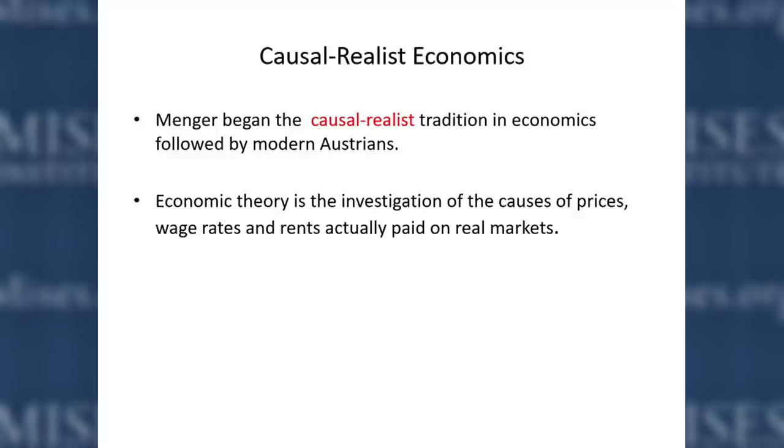Menger wanted to show the causes of real prices paid in actual markets — prices being paid right now by people shopping in CVS or Walmart, or firms buying inputs from one another in the labor market. Economic theory to him was the investigation of causes of prices, wage rates, and rents actually paid on real markets — not equilibrium prices, not prices that would be paid if everybody knew everything, but prices paid by human beings with limited knowledge whose expectations sometimes turn out to be wrong. Real people.